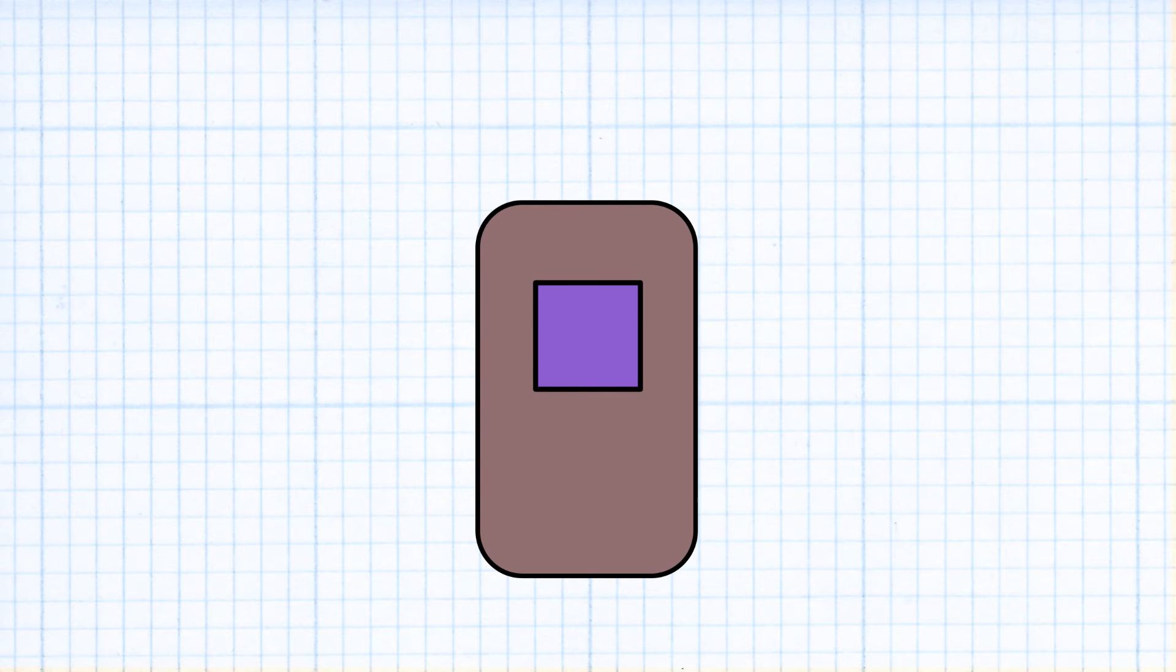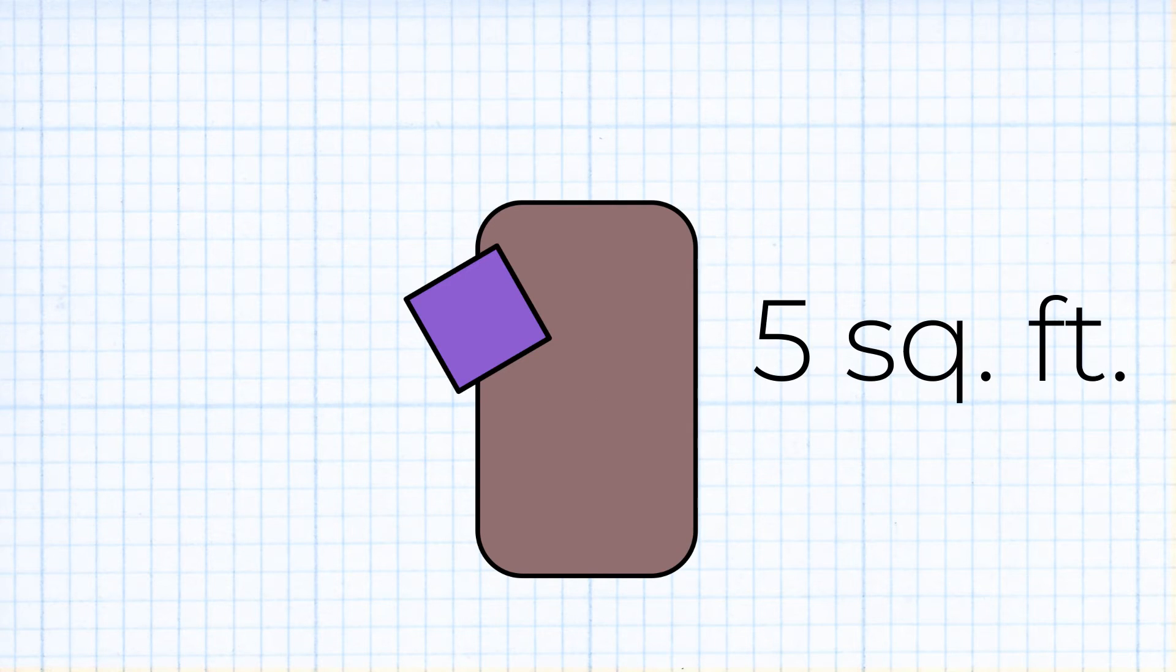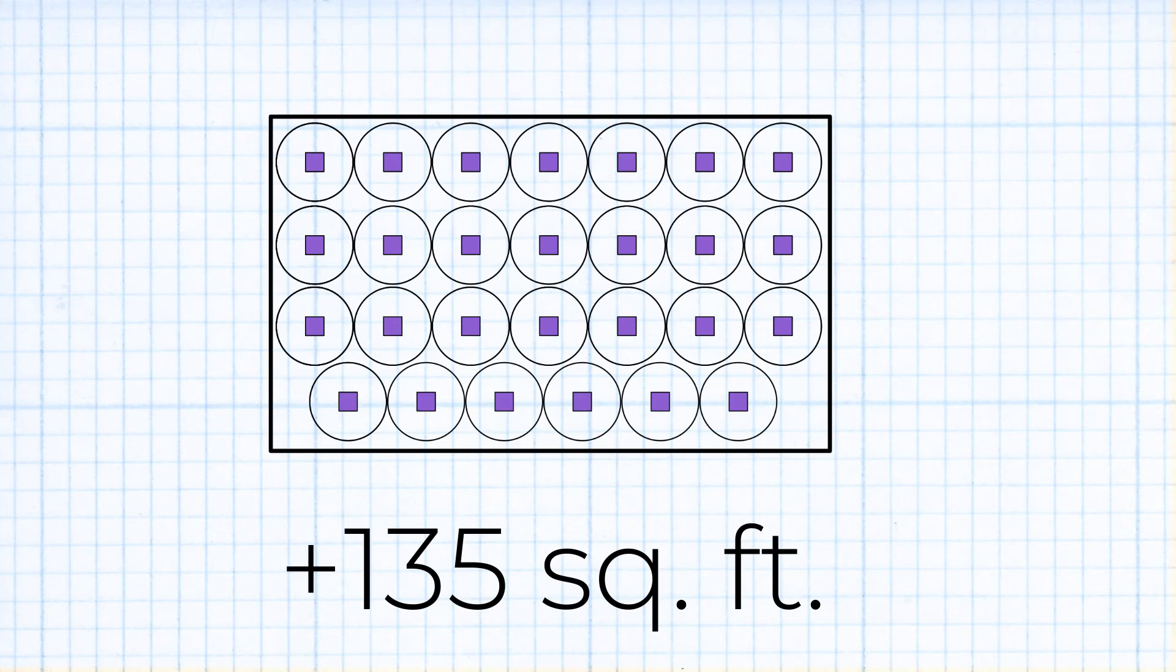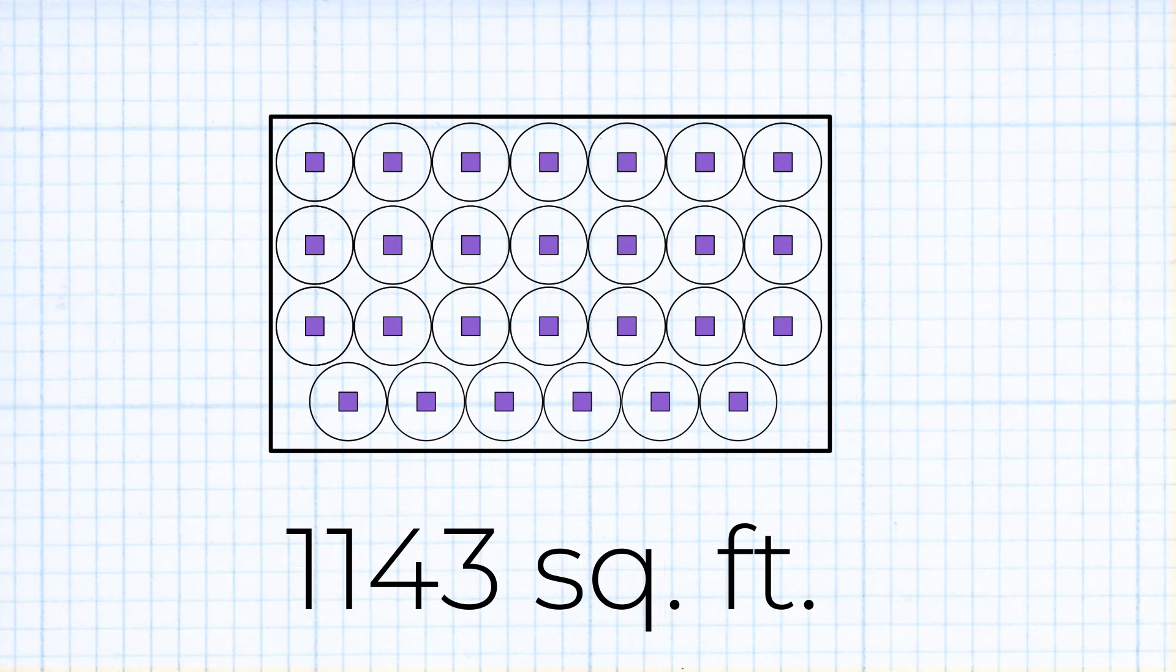Okay, but students aren't just points. They sit at desks, usually. And a desk takes up about 5 square feet, so we're adding at least 135 square feet to the room, getting us to about 1100 square feet.